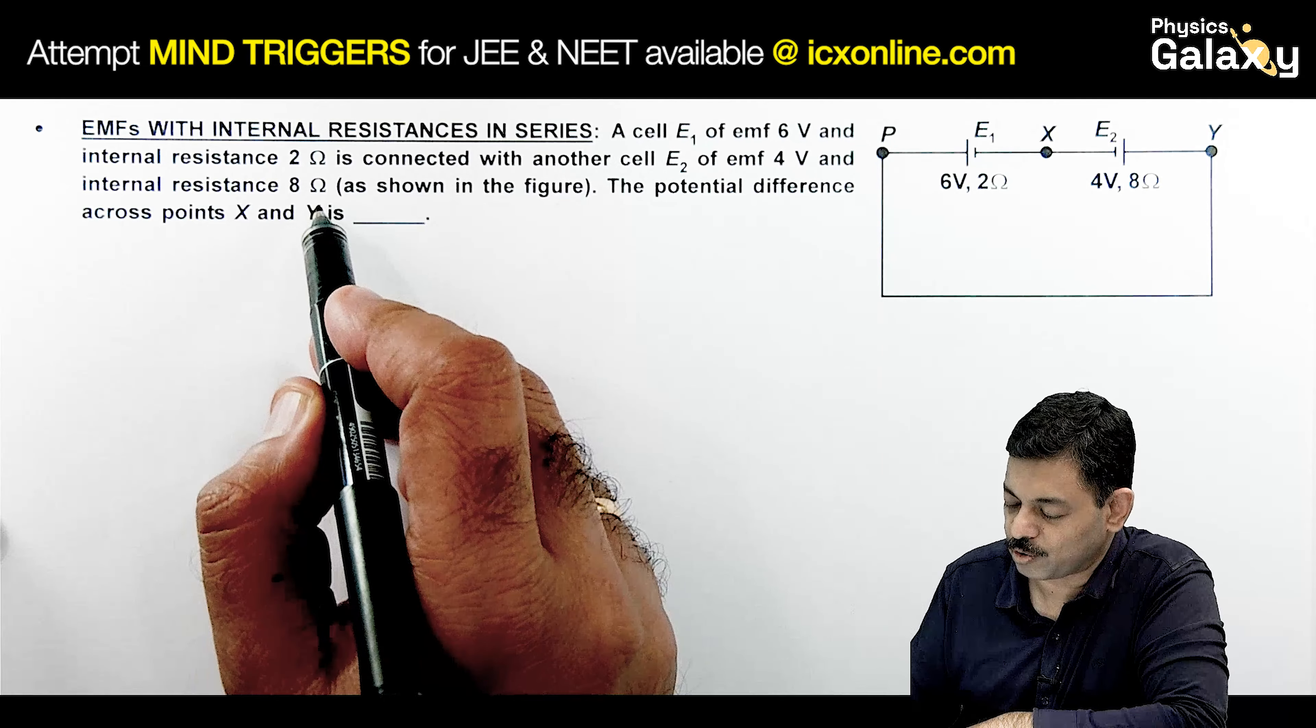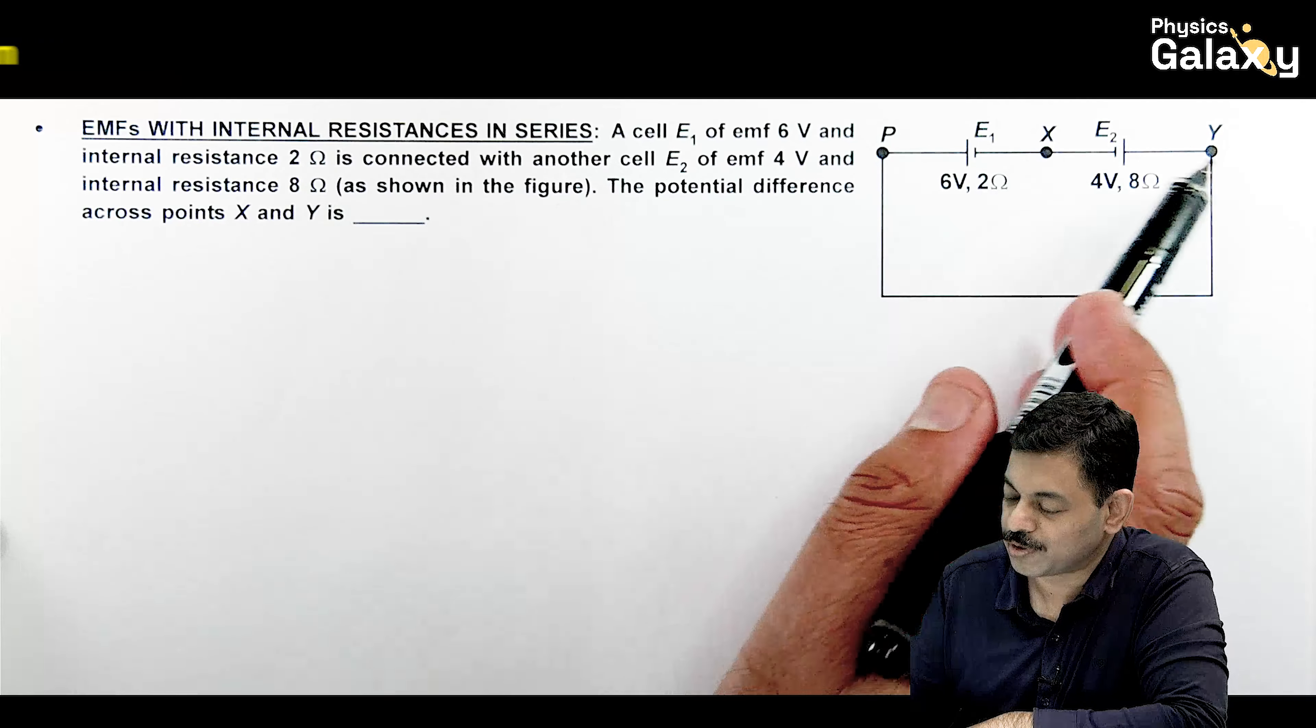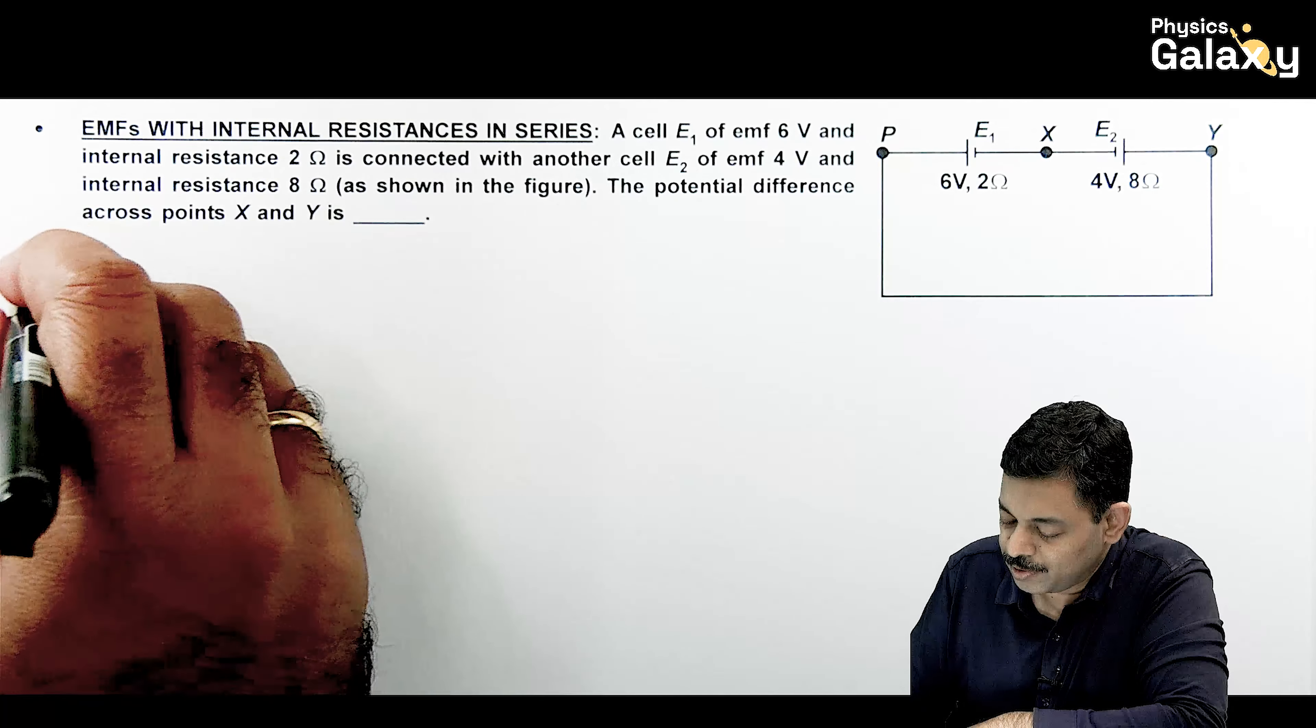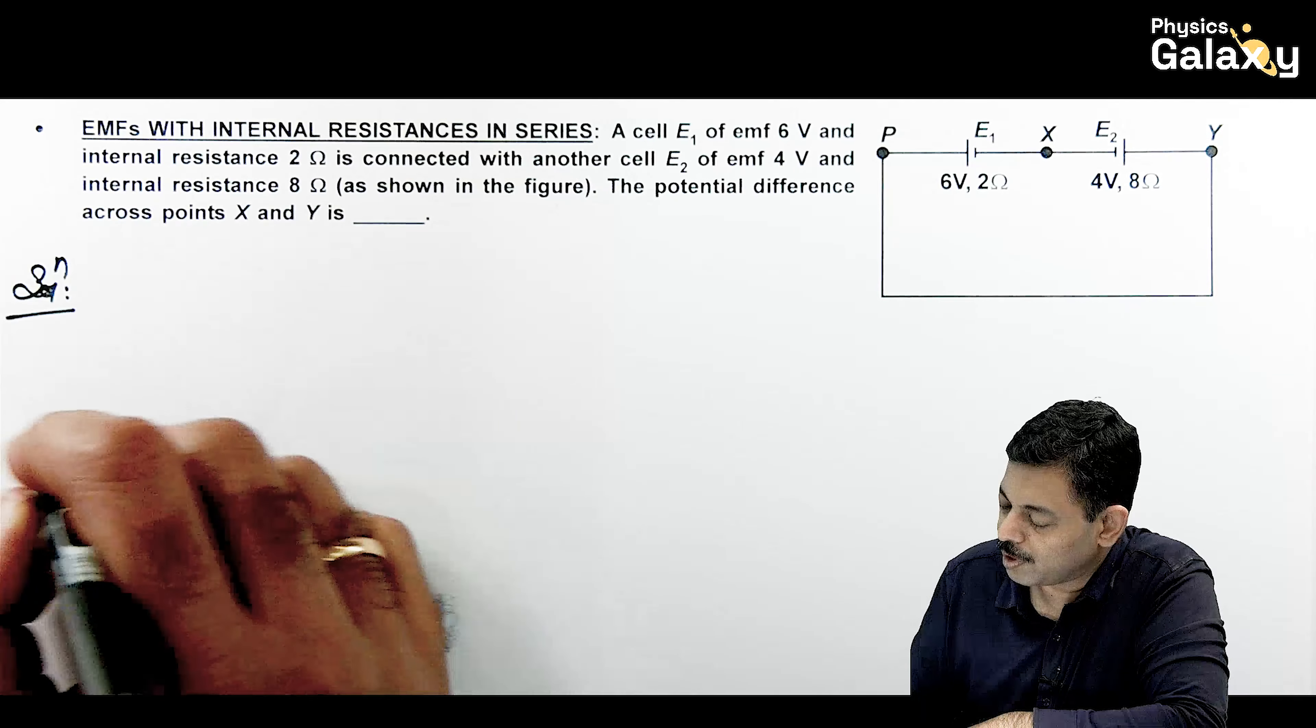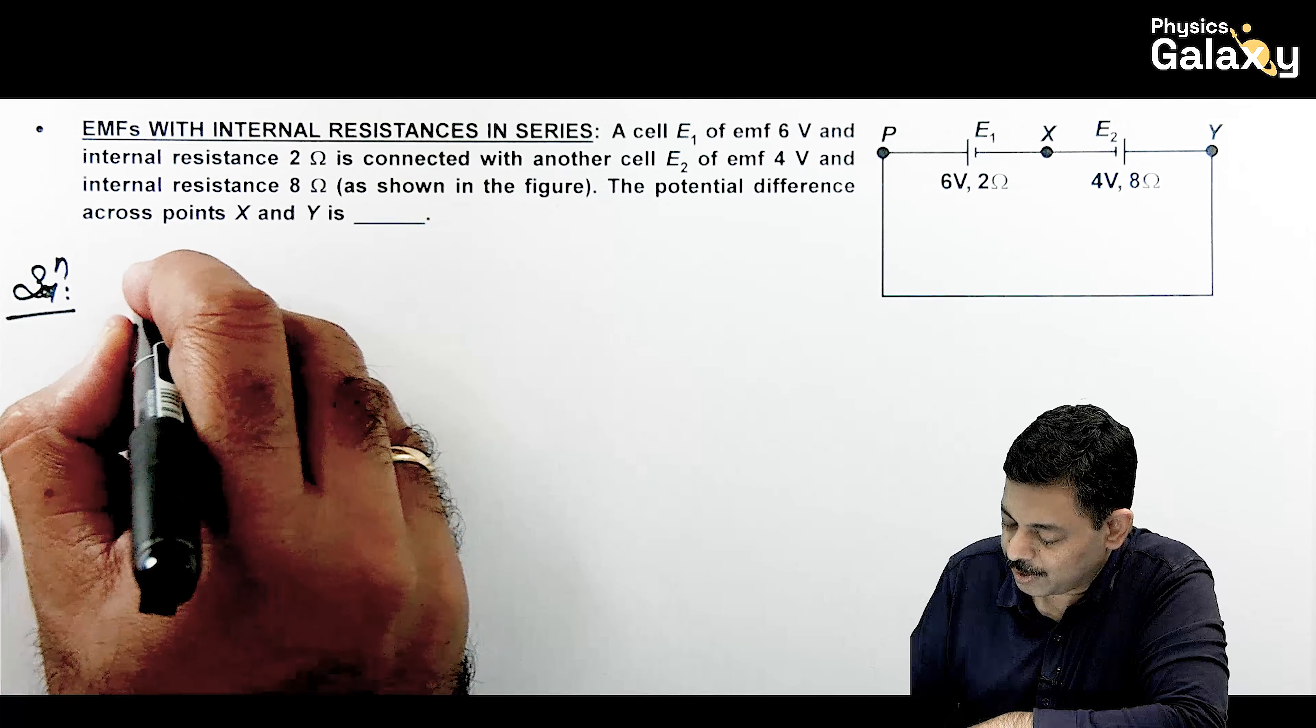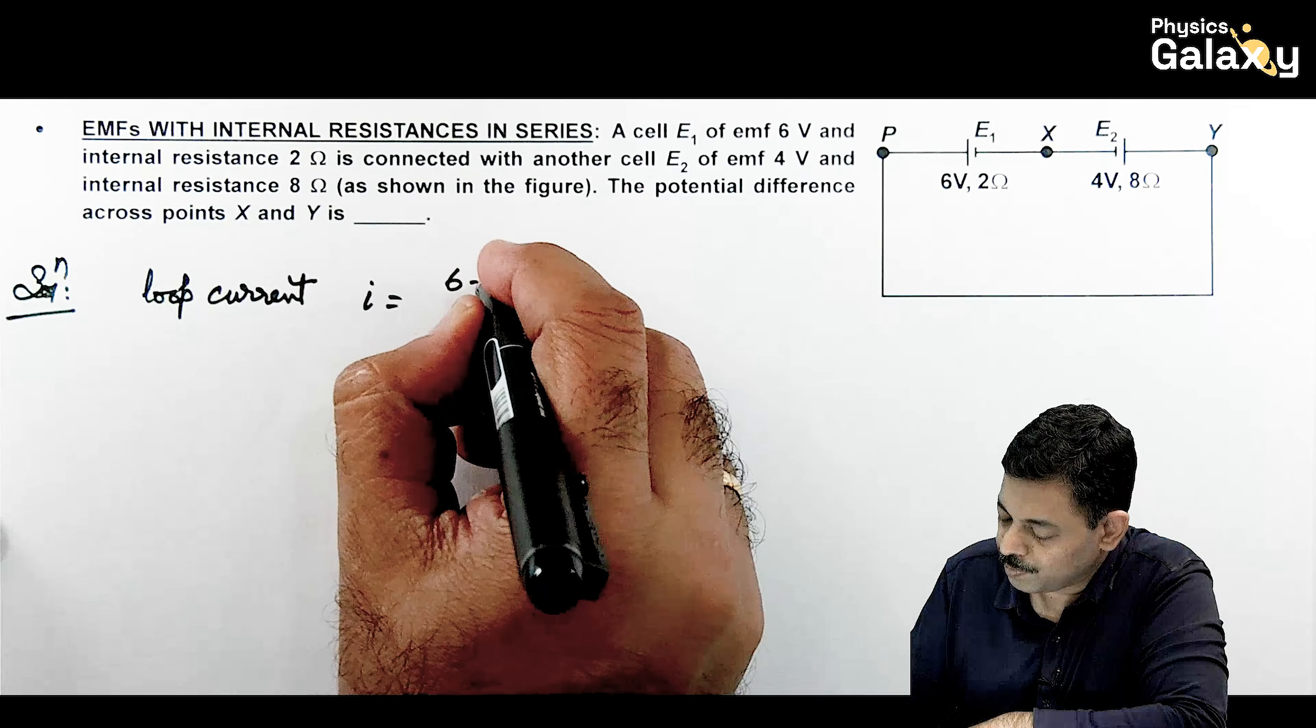The question says E1 of EMF is 6 volts with internal resistance 2 ohms, connected with cell E2 of EMF is 4 volts and internal resistance 8 ohms. It is asking the potential difference across points X and Y we want to calculate. So here in solution, first we can calculate the loop current.